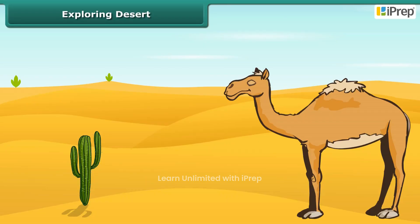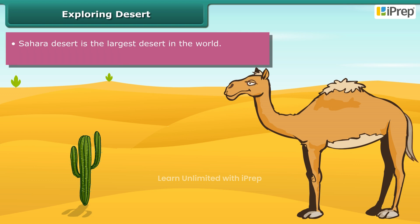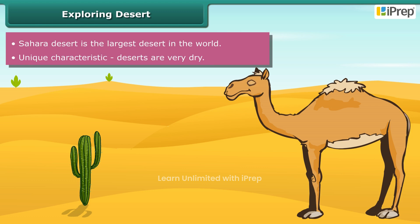Students, did you know that the Sahara Desert is the largest desert in the world? It is located in Africa. Deserts have a unique characteristic of being dry. They are hot and dry due to high rate of evaporation and limited rainfall.